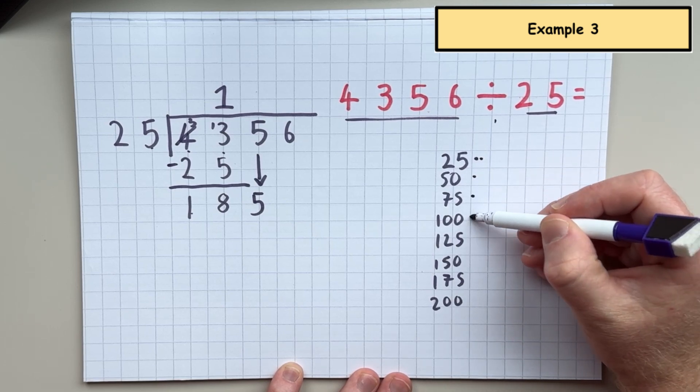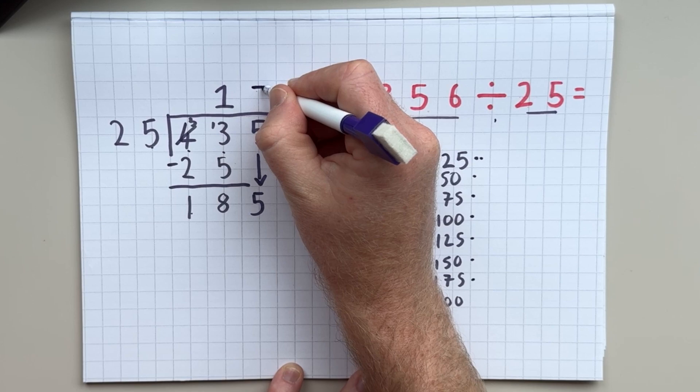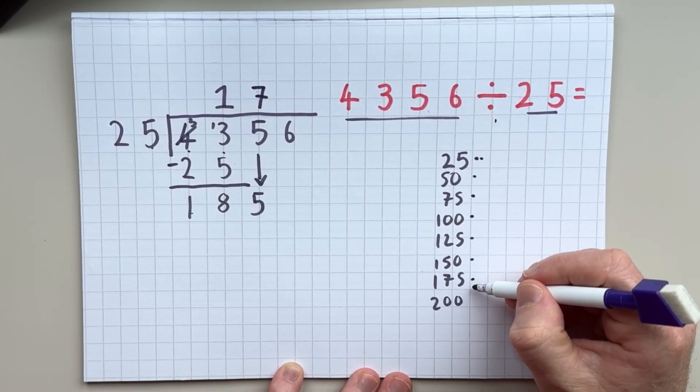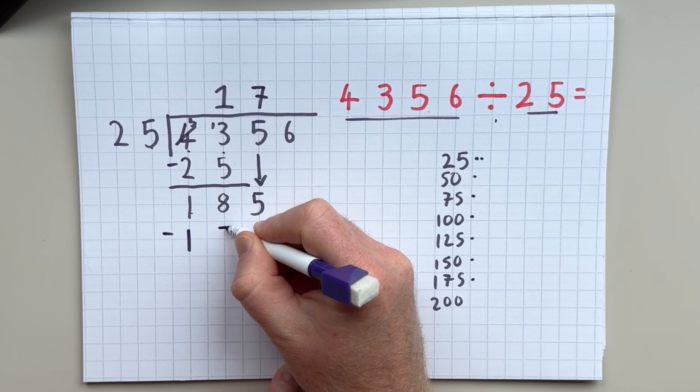How many 25s in 185? There's one, two, three, four, five, six, seven. And to work out the remainder, I'm going to take away 175.